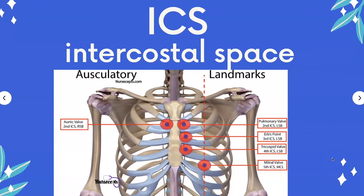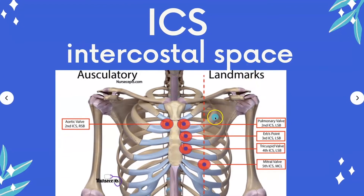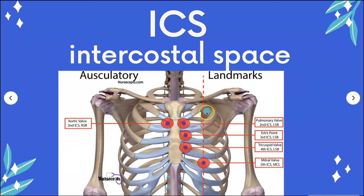ICS stands for intercostal space. Knowing your prefixes and what they mean will help you out. 'Inter' means in between. So intercostal — and these are basically your ribs. In Spanish, ribs is 'costilla,' so 'costal' is probably derived from the Latin term for rib. Inter means in between the ribs, so intercostal space is simply the space in between the ribs.